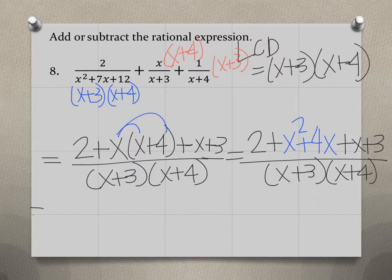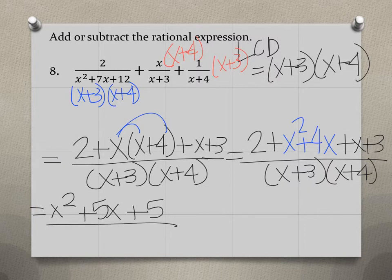So now let's continue with simplifying. We're going to add like terms. I'm going to write it where my exponents are in descending order. So I have x squared. Then I've got 4x plus x is 5x. And then 2 plus 3 is 5. All divided by x plus 3 times x plus 4.